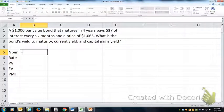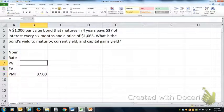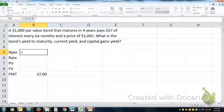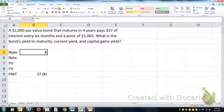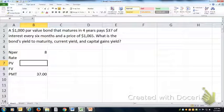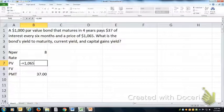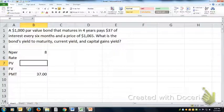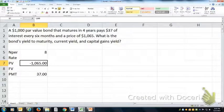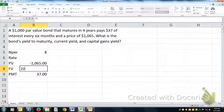If it pays $37 every six months for four years, that's four years with two payments a year, so it's a semi-annual bond. It costs $1,065 and has a par value of $1,000.